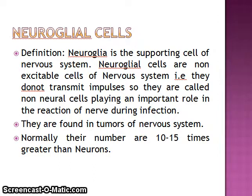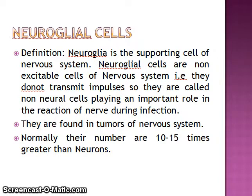They are found in tumors of the nervous system. Their important role is that they play a key part in the reaction of neurons during infection. Normally, their numbers are 10 to 15 times greater than neurons.